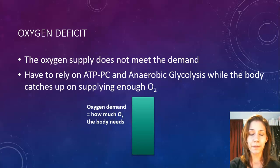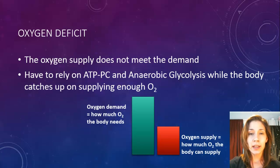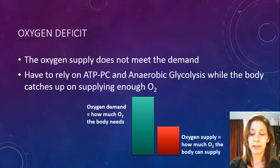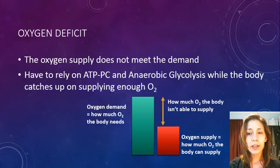If you have a look at the graph, there's a diagram showing oxygen demand — how much oxygen you actually need. In a case of oxygen deficit, the oxygen supply is actually less. The oxygen deficit is represented by the yellow arrow, showing how much oxygen the body isn't getting.